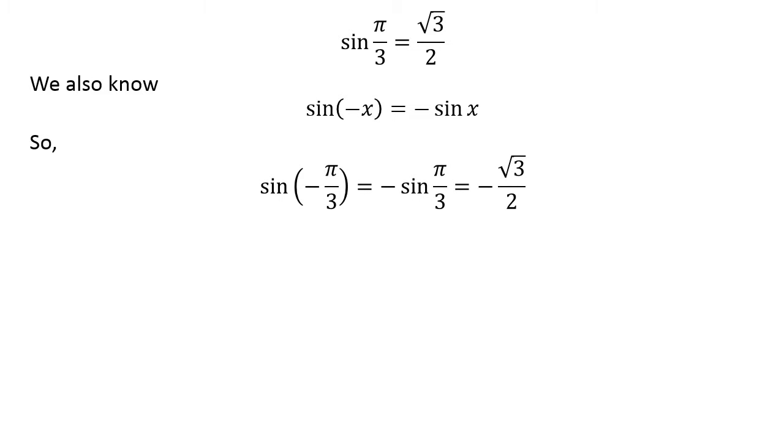So, sine of minus pi upon 3 is equal to minus square root of 3 upon 2.